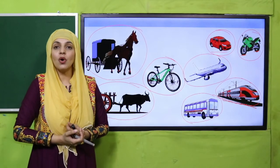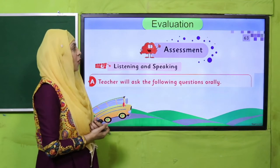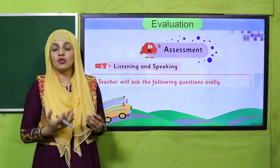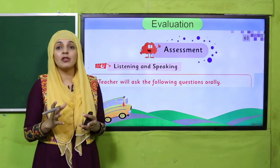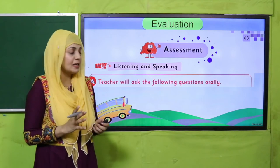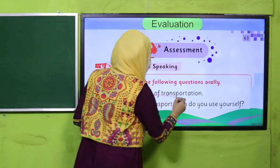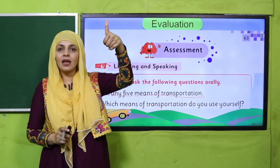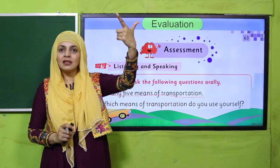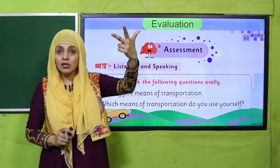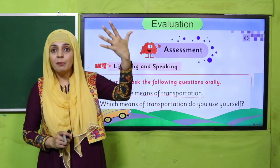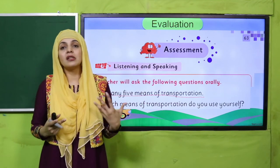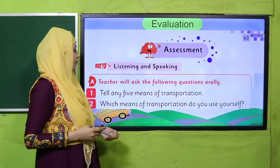Now let's move to the evaluation. The oral assessment is on page number 63. Teachers, you need to ask these questions orally from the students. Tell any five means of transportation: car, cycle, motorbike, aeroplane, bus — and also tonga, rickshaw. These are all different means of transportation. Next question: which means of transportation do you use yourself?